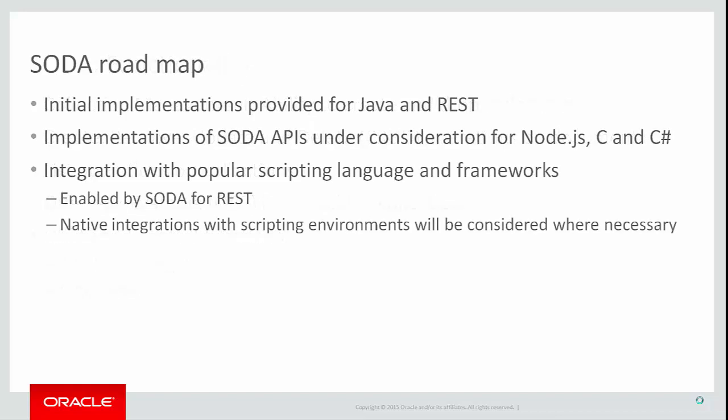The initial implementation of SODA is SODA for Java, an API designed for use by Java developers. Also available is SODA for REST, which makes SODA available as a set of services consumable by developers who have adopted the REST-based programming model. SODA for REST is released as part of Oracle REST Data Services, ORDS release 3.0. We are also considering SODA implementations for Node.js, C, and Microsoft C-sharp. One advantage of SODA for REST is that it makes SODA functionality available to any programming language capable of making an HTTP request.